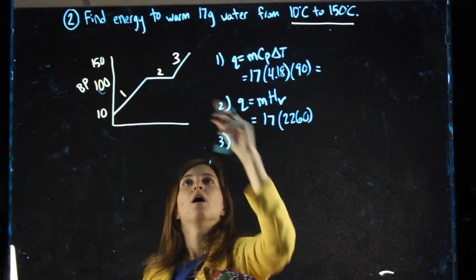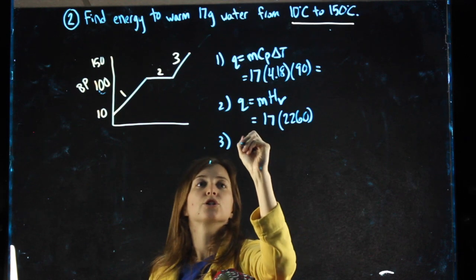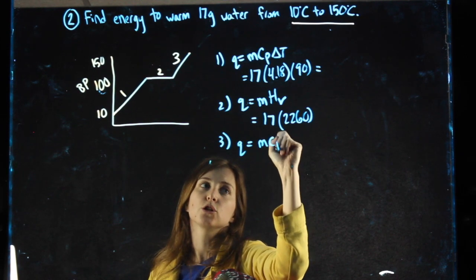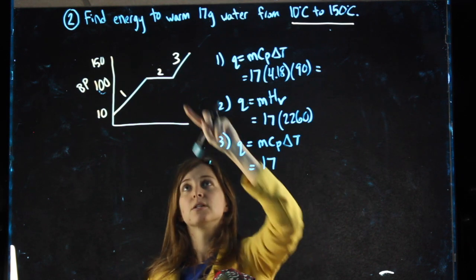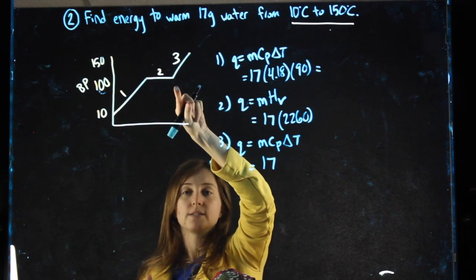For step three, again, it's diagonal. We know there's a change in temperature involved, so MCP delta T. Still 17 grams. Since we just boiled it, that's what step two was, it was a liquid.